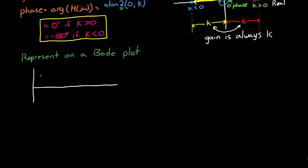So now that we have our gain in phase, how can we represent this on a Bode plot? Well, the gain is easy. Like we said before, it's just k for all frequencies. But to plot it on a Bode plot, we have to convert it into decibels, which is just 20 times the log base 10 of the magnitude of k. And again, it's constant for all frequencies, so it's just a horizontal straight line.